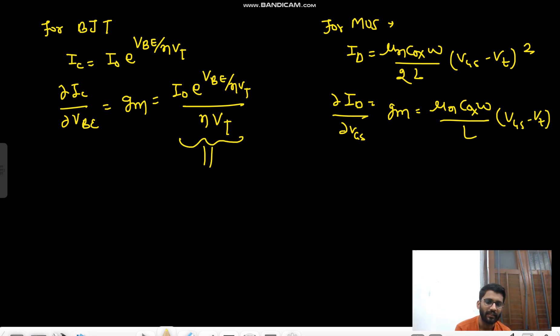Now you can see this is exponential, right? And this is linear. So which will be greater? Exponential one, right? Just assume your VBE is 5 and VGS is also 5. Okay, your VGS is 5 and your VBE is 5. So if you put in BJT, you will get e^(5/(eta·VT)).